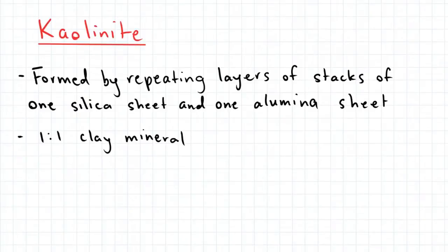So kaolinite is formed by repeating layers of stacks of one silica sheet and one alumina sheet. This is known as a one-to-one clay mineral.